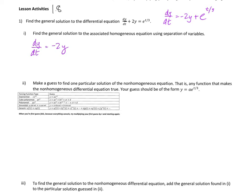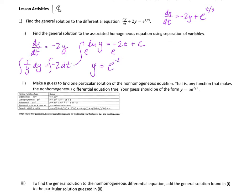I'm going to move the y to the left and dt to the right: 1/y dy equals negative 2 dt. Integrate both sides: ln y equals negative 2t plus c. Exponentiate both sides: y equals e to the negative 2t plus c, which I can rewrite as e to the negative 2t times e to the c. Because e to the c is just a new arbitrary constant, I can call it k. So y homogeneous equals k e to the negative 2t.